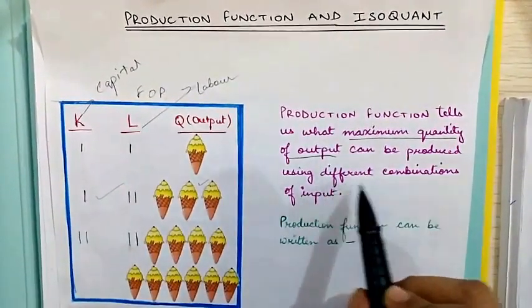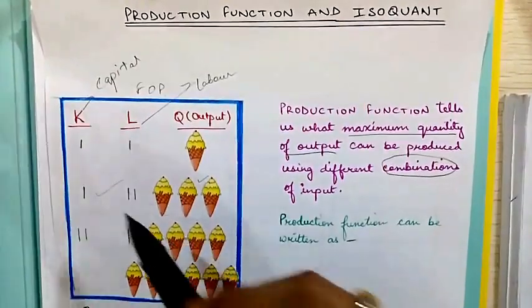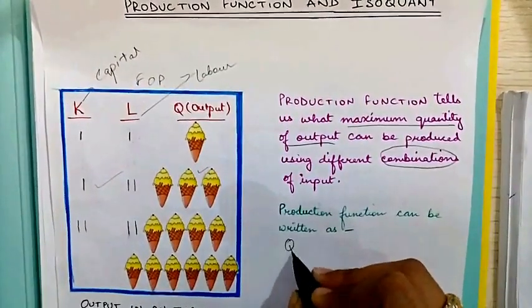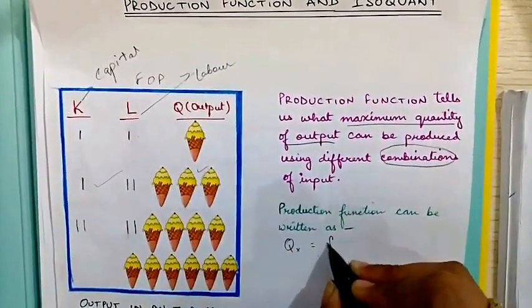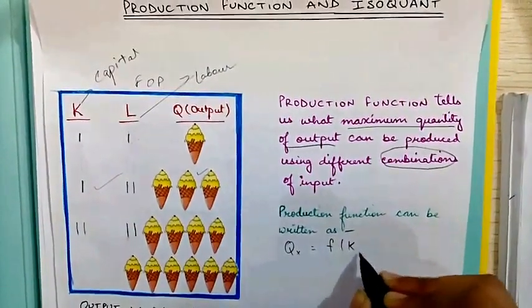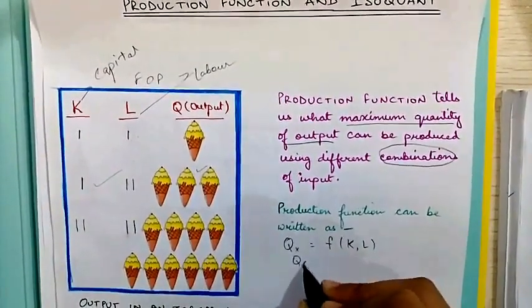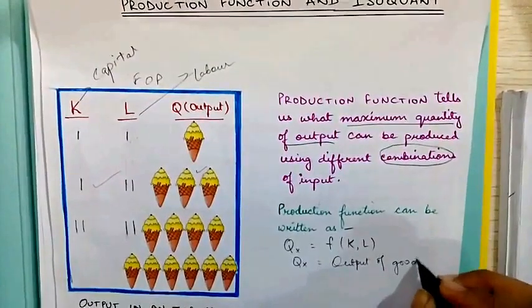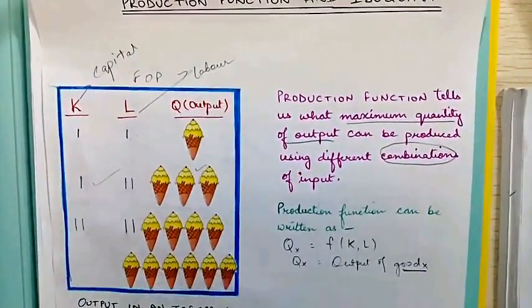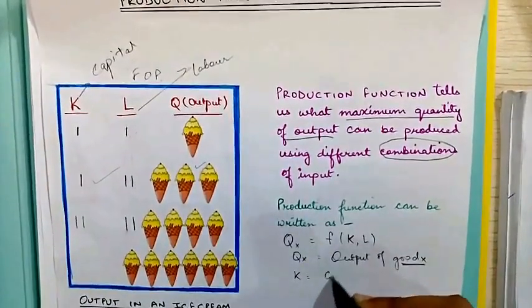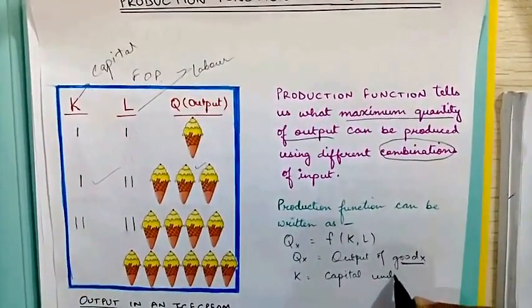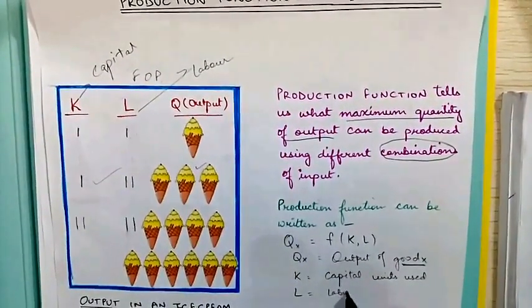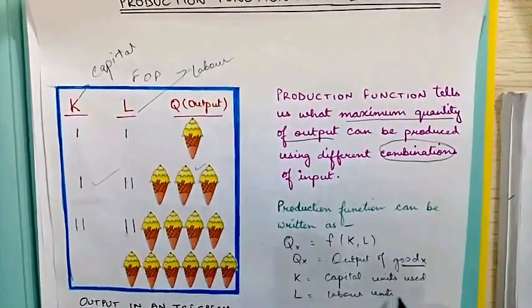In simple words, production function tells us what maximum quantity of output can be produced using different combinations of input. The production function can be written as Qx = f(K, L), where Qx is the output of good X — which is our ice cream — K is the capital units used, and L is the labor units used.